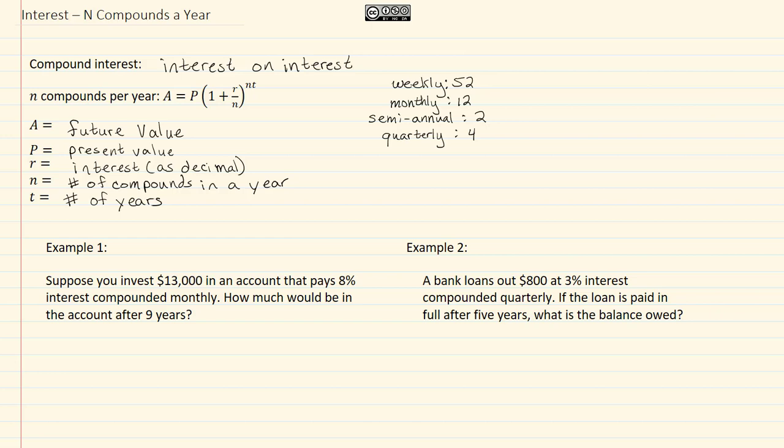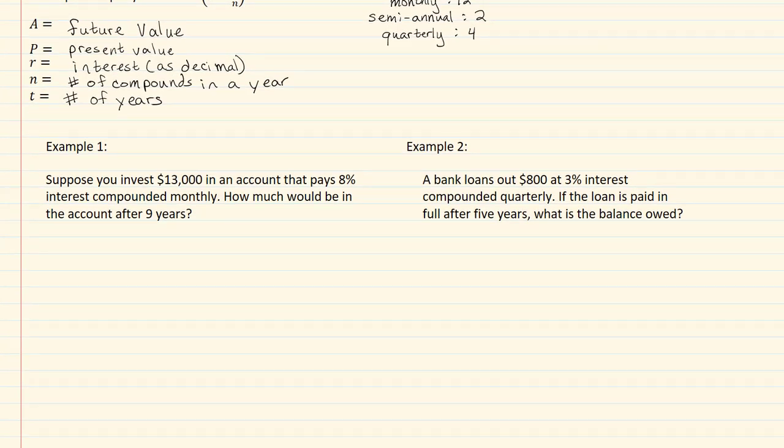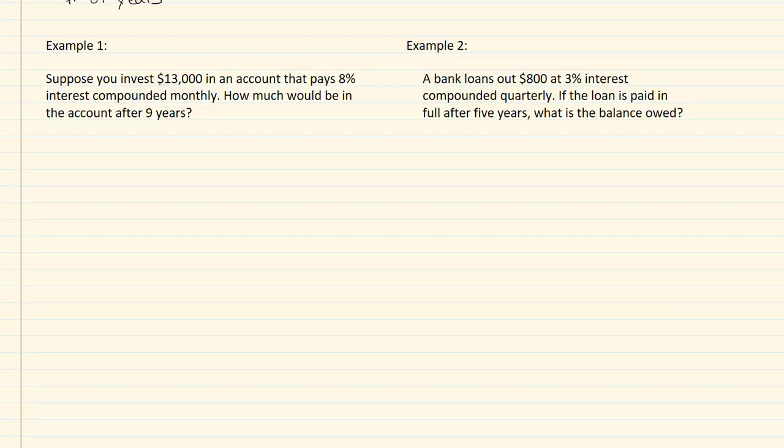So let's take a look at our examples. If you invest thirteen thousand in an account that pays eight percent interest compounded monthly, how much would be in the account after nine years? So our P is equal to thirteen thousand, our r is going to be eight percent, so point zero eight. Our n is monthly, so that's going to be twelve, and our t is going to be nine.